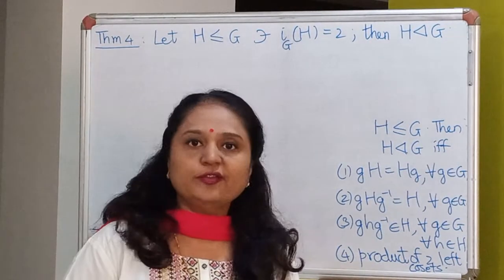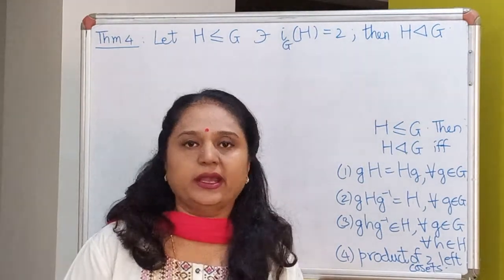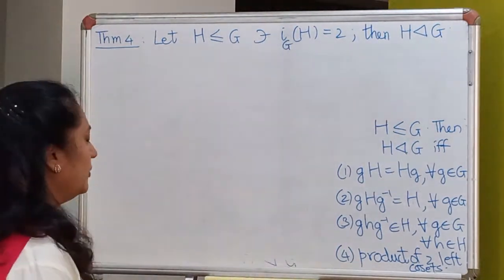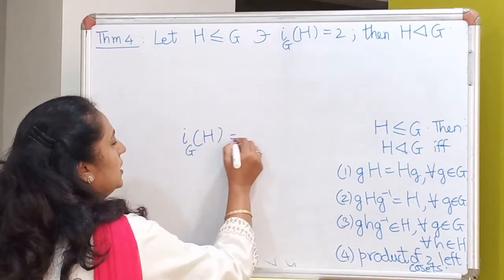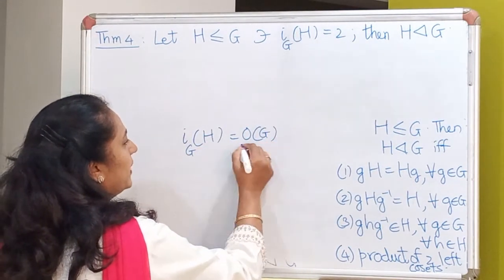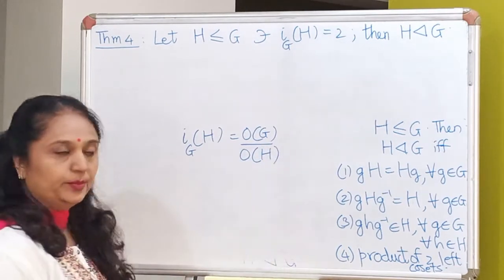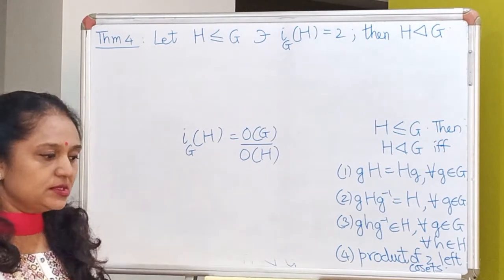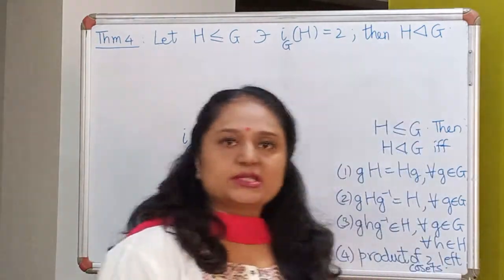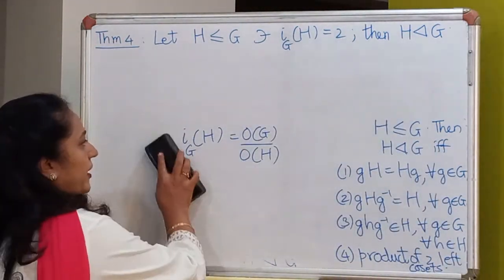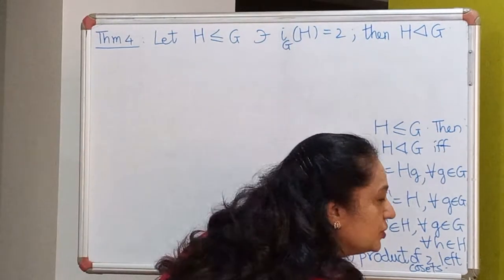If the group is finite, we also have a nice formula for the index: the index of H in G is simply the order of the group divided by the order of the subgroup. So for us, index 2 means there are precisely two distinct left or right cosets of H in G.